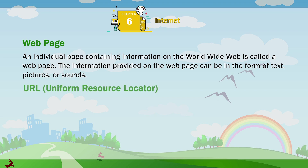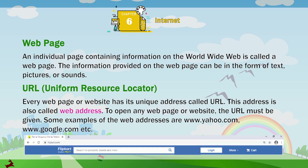URL — Uniform Resource Locator: every web page or website has its unique address called URL. This address is also called web address. To open any web page or website, the URL must be given. Some examples of web addresses are www.yahoo.com, www.google.com, etc.